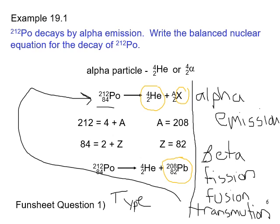Those are the main types asked for in fun sheet question 1, so hold off on that until you've finished the chapter and go back to fill them in.